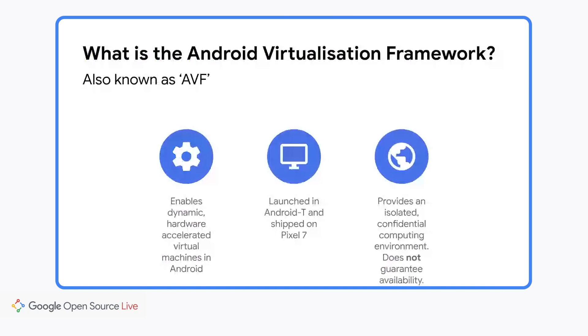The KVM hypervisor is a well-established mature hypervisor part of the Linux kernel, and we're extending it so that we can deploy it in Android on your phone. The thing we're working on is called the Android Virtualization Framework, also known as AVF. The AVF achieves a number of things. On the left-hand side, it enables dynamic hardware-accelerated virtual machines in Android. By enabling dynamic VMs, Android doesn't need any knowledge of the virtual machines you want to run when you turn your phone on. You can create, configure, spawn, manage, and destroy these things completely at runtime, which is really flexible.